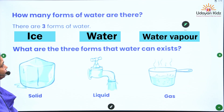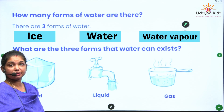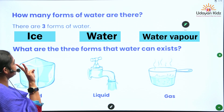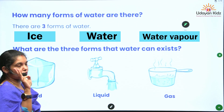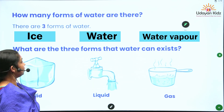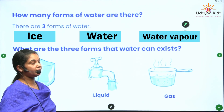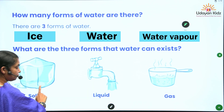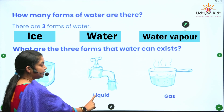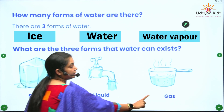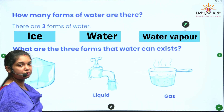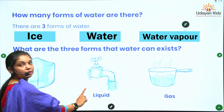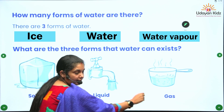So how many forms of water are there? Very good — three! There are three forms of water. What are the three forms that water can exist in? The first one is solid, liquid, gas. Repeat after me: solid, liquid, and gas.